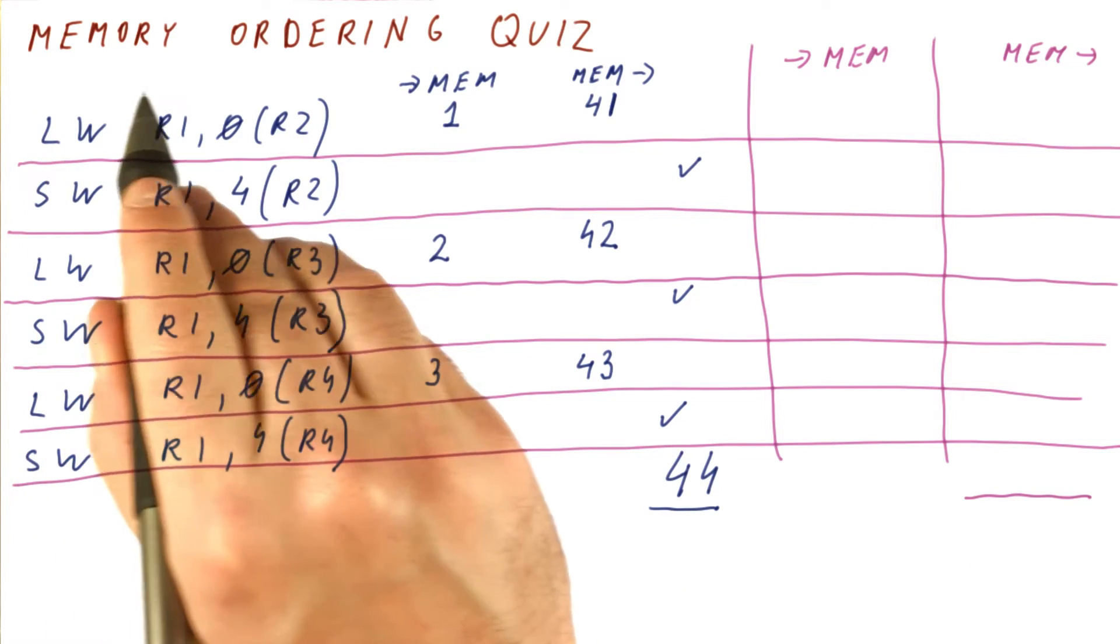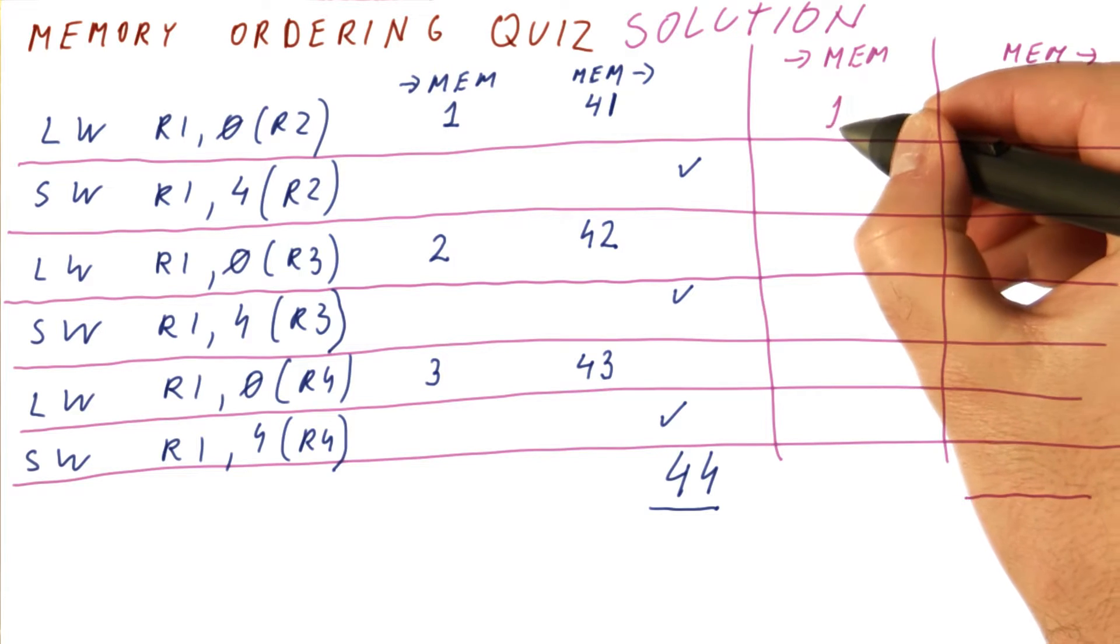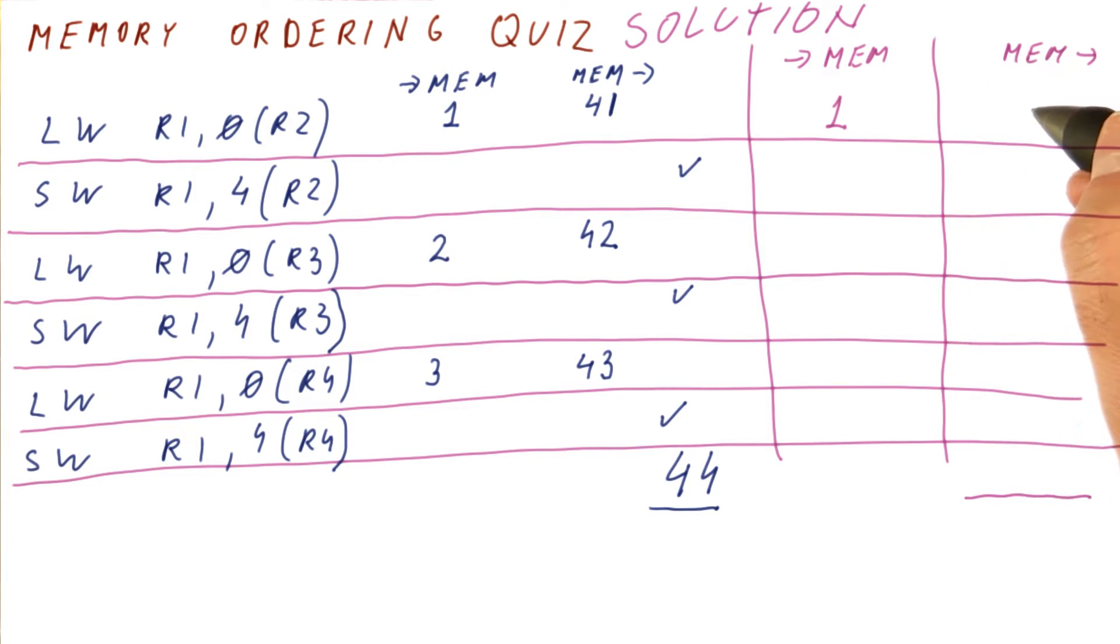Okay, let's see our memory ordering quiz solution. This load is still sent to memory in cycle one and will come back in cycle 41.